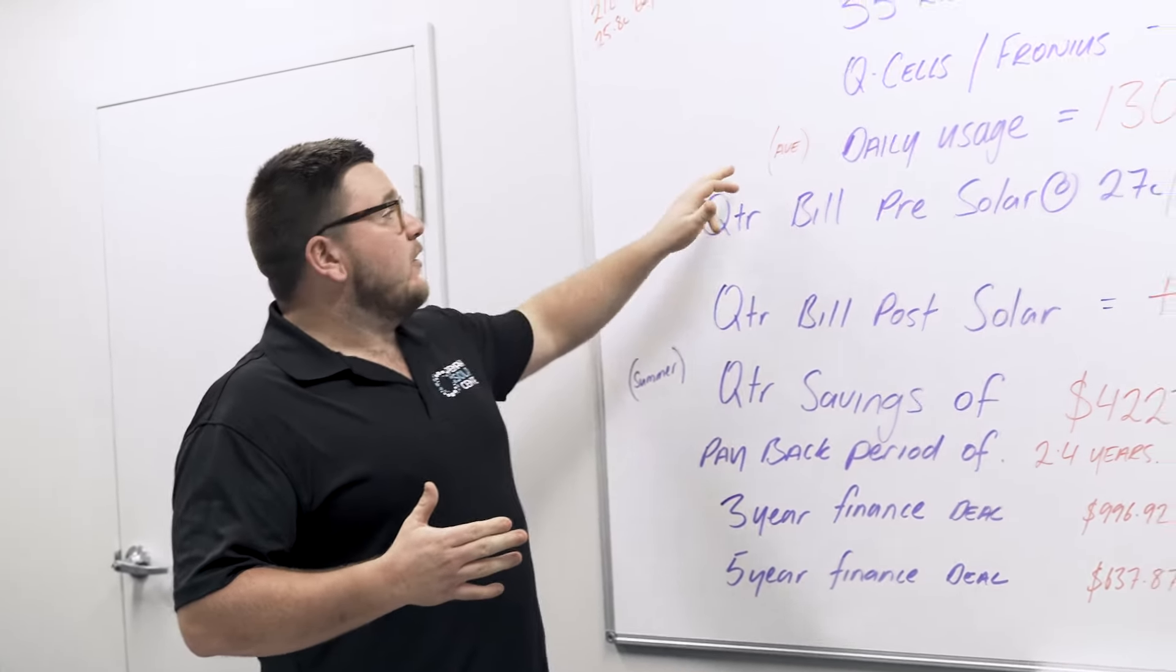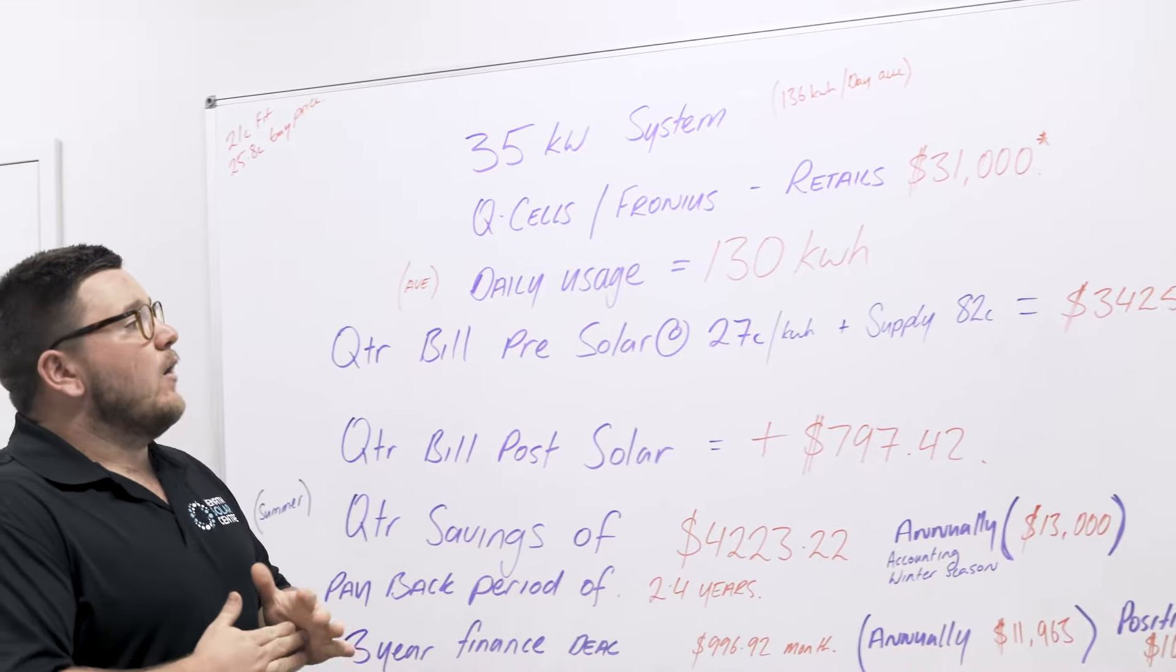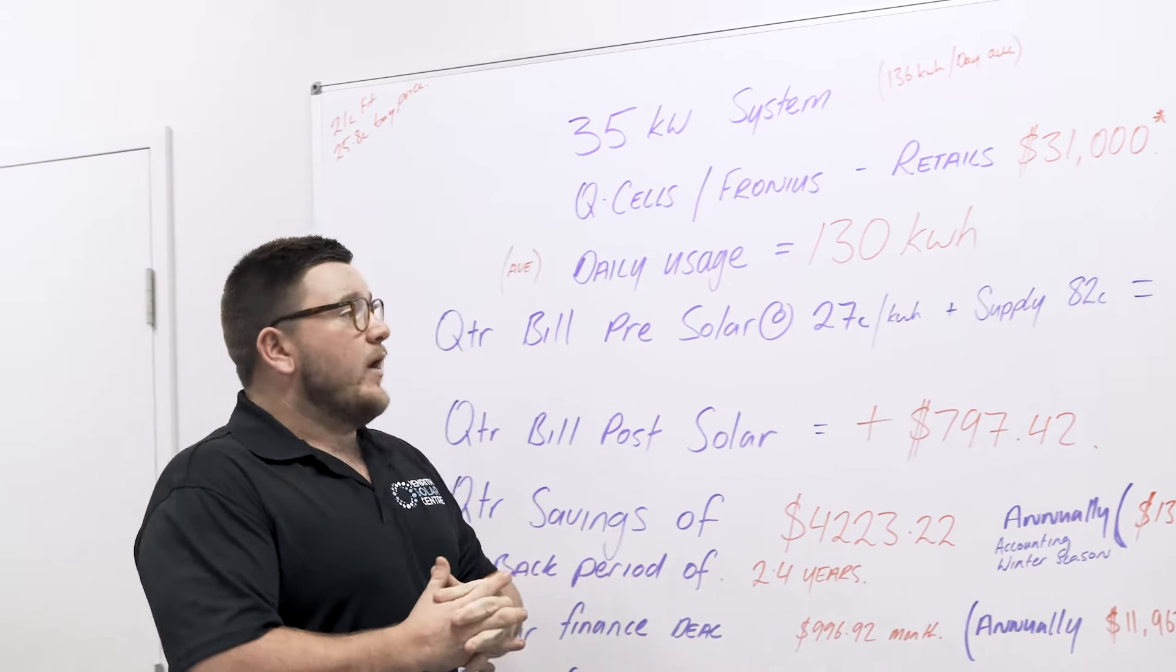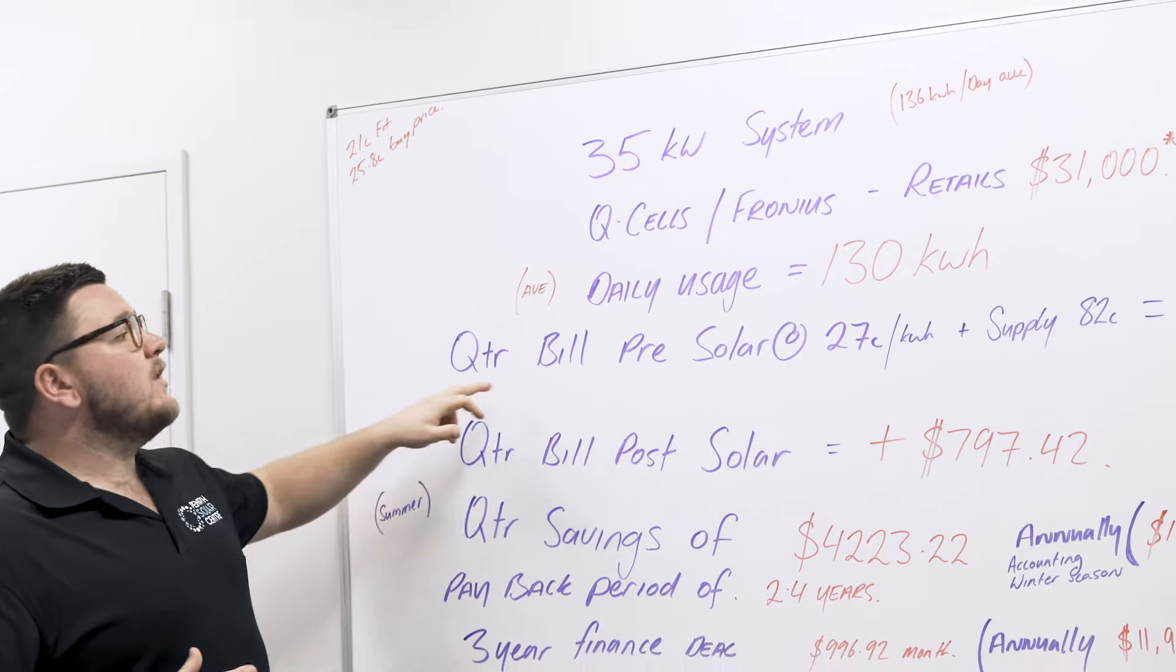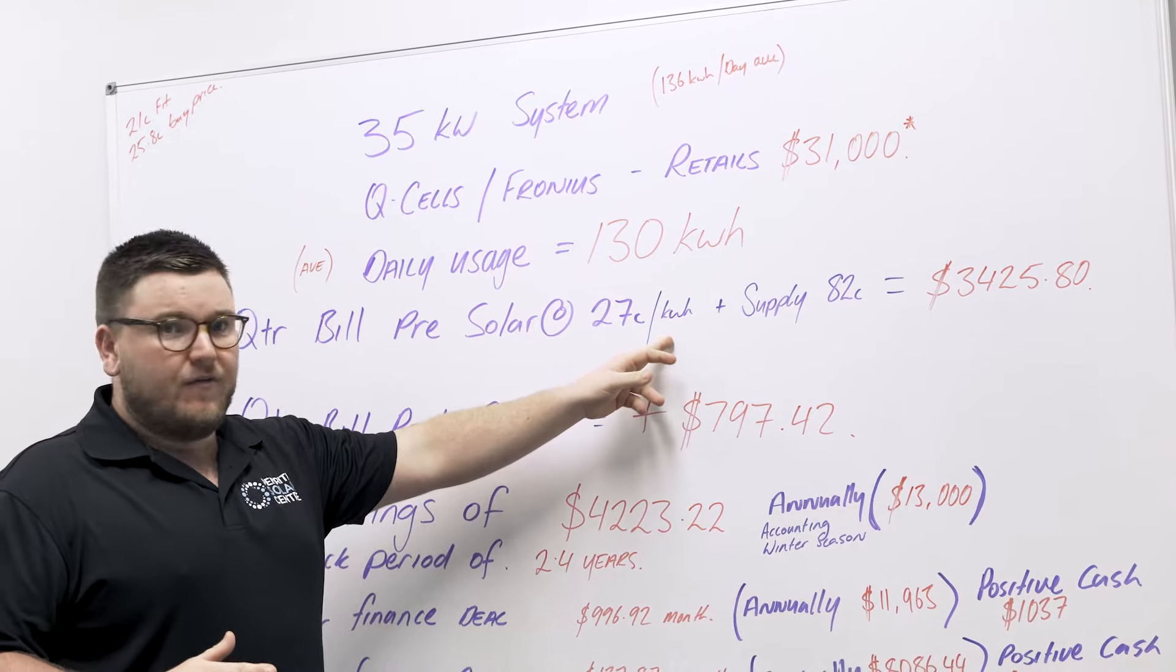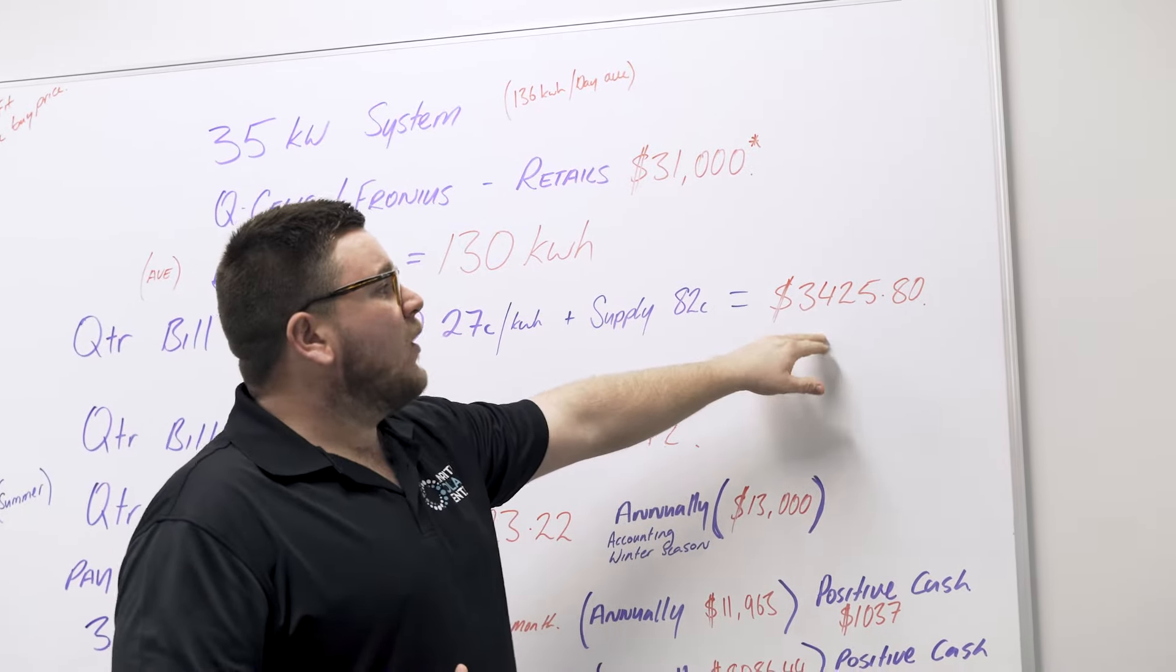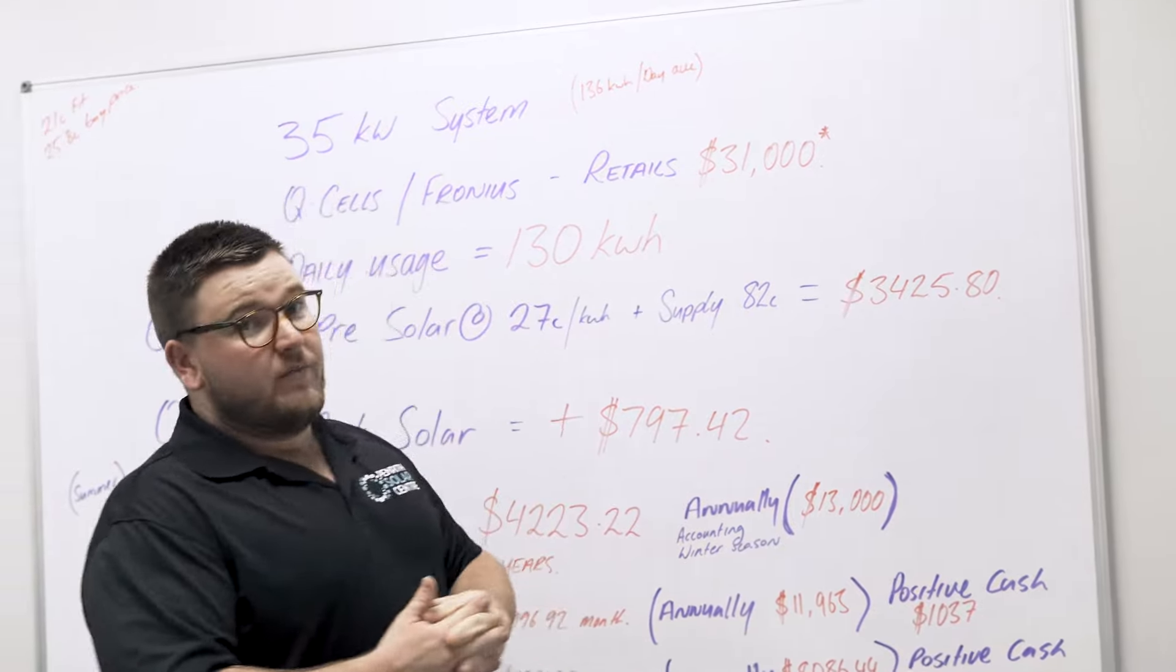Our daily usage here at Penrith Solar Center, and this is a fact, this isn't a guesstimate because we do have advanced monitoring here, we use on average 130 kilowatt hours per day. 130 kilowatt hours is a massive amount of energy. Our quarterly bill pre-solar, which we were paying 27 cents per kilowatt hour for energy and our supply charges 82 cents, at 130 kilowatt hours we're paying $3,425.80 quarterly for our energy bills. That is a lot of money.